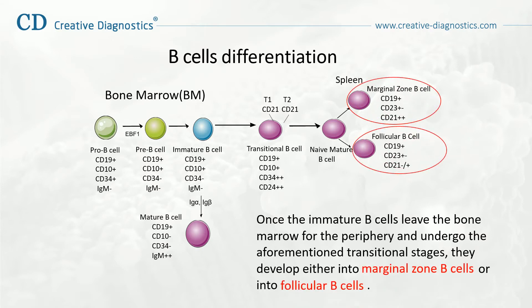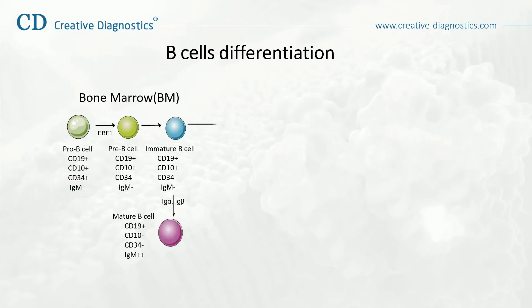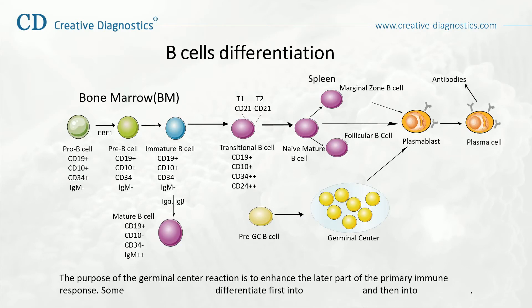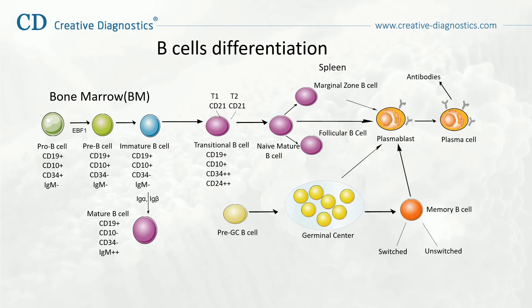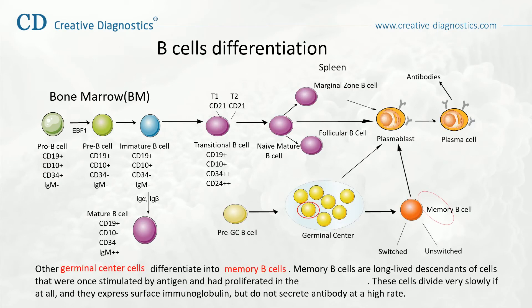The purpose of the germinal center reaction is to enhance the later part of the primary immune response. Some germinal center cells differentiate first into plasma blasts and then into plasma cells. Other germinal center cells differentiate into memory B-cells, which are long-lived descendants of cells once stimulated by antigen and proliferated in the germinal center. These cells divide very slowly, if at all, and they express surface immunoglobulin but do not secrete antibody at a high rate.